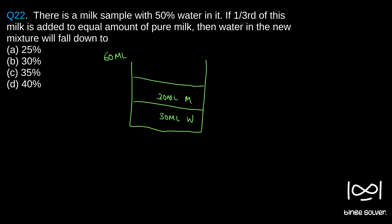So from this, one-third of this sample is added to equal amount of pure milk. We will take another bowl and one-third of this sample. What does that mean? We will have 10 ml water and 10 ml milk, right? To this, equal amount of pure milk is added. So total 20 ml we have, so to this we add 20 ml.